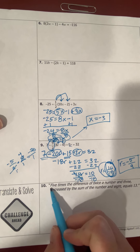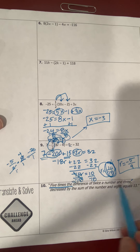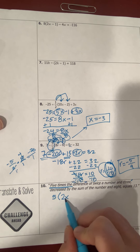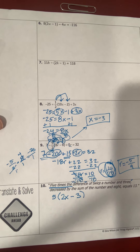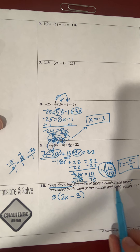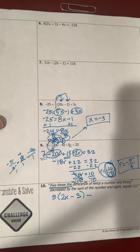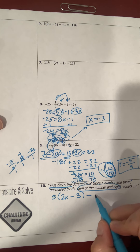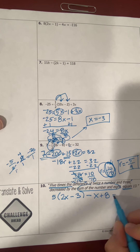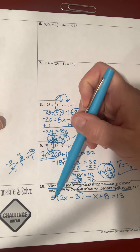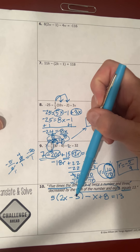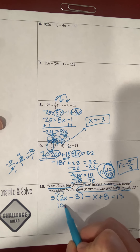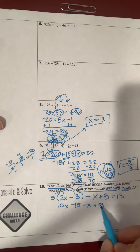For number 10, we translate and solve: 'five times the difference of twice a number and three' — difference means subtraction, so that's a parenthetical phrase: 5(2x − 3). 'Decreased by the sum of the number and eight' — that's minus (x + 8). The whole expression equals 13. Reading it back confirms it matches.